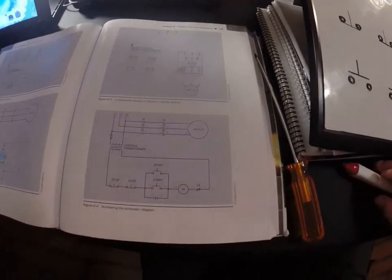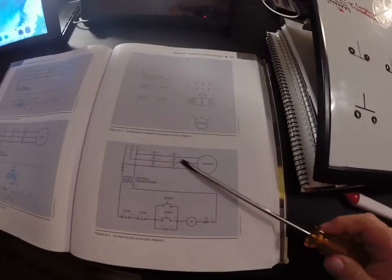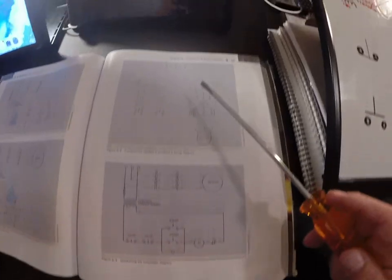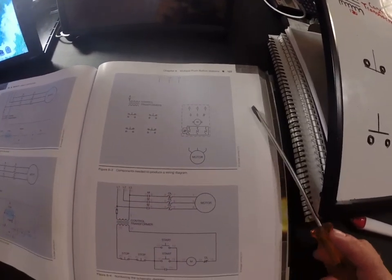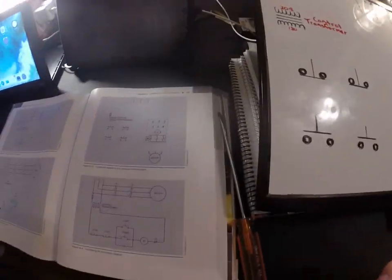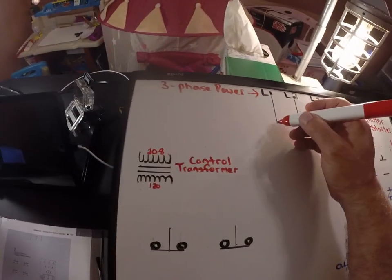The drawing that we're going to be using to copy from is we're going to transfer this ladder logic onto this, and this is how we're going to do it. So first thing we're going to do is we're going to take our three-phase feed.